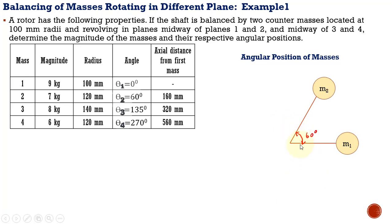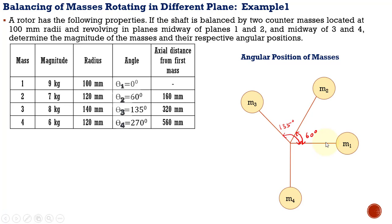Whatever direction we choose is correct, but we have to take all other references in the same direction. If I take counter-clockwise direction, I have to follow it for all other masses. So from mass one, measuring 60 degrees counter-clockwise gives mass two. Mass three is located 135 degrees from mass one, also in the counter-clockwise direction. Mass four is 270 degrees from the reference mass one. Now we have constructed the angular positions of all masses.